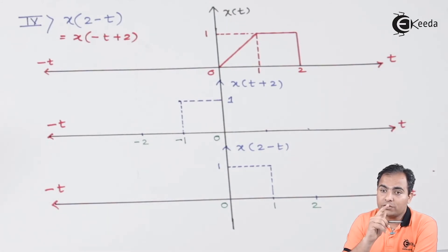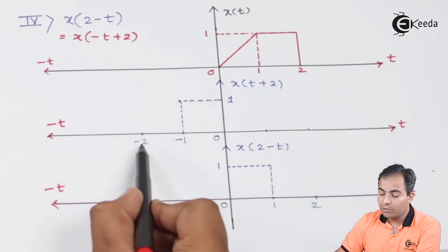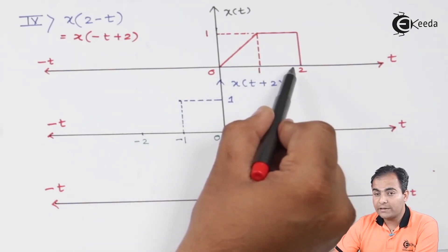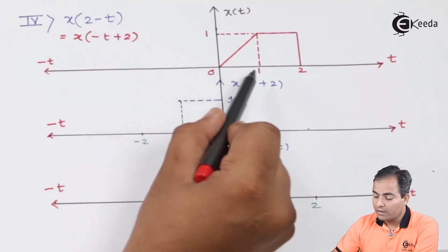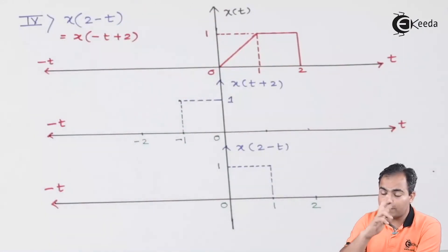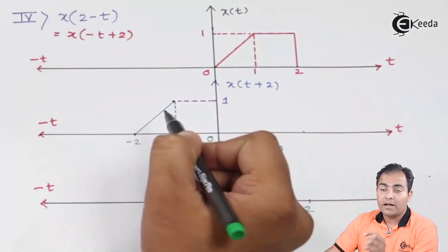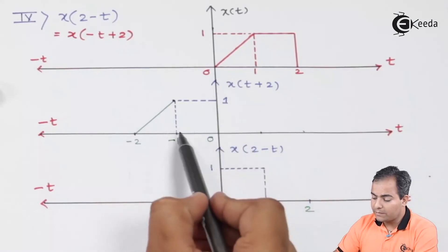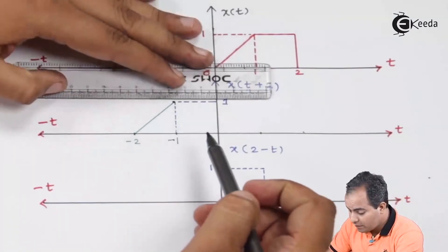The plus 2 sign indicates a time advance — the graph is shifted left by 2. The zero instance shifts to minus 2, the instance at one shifts to minus 1, and the instance at two shifts to zero. In between zero and one there was a slope; now there is a slope from minus 2 to minus 1. Between one and two there was a constant amplitude; now between minus 1 and zero there is also a constant amplitude of one.